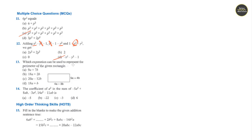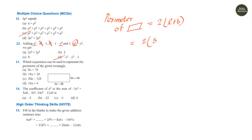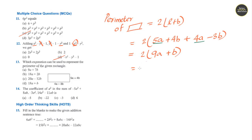Question 13: Which expression represents the perimeter of the given rectangle? Perimeter is 2 times length plus breadth. Length is 5a plus 4b, breadth is 4a minus 3b. Adding: 5a plus 4a is 9a; 4b minus 3b is b. So 2 into 9a plus b gives 18a plus 2b. Answer is option b.